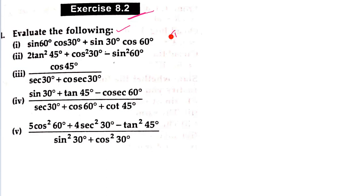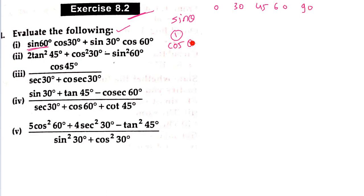Let's take the first example: sin60·cos30 + sin30·cos60. Let me give the table of values. For angles 0, 30, 45, 60, 90 degrees: sin 0 = 0, sin 30 = 1/2, sin 45 = 1/√2, sin 60 = √3/2, sin 90 = 1. And cos 0 = 1, cos 30 = √3/2, cos 45 = 1/√2, cos 60 = 1/2, cos 90 = 0. Note that sin and cos at 0 and 90 are exactly opposite, and 30 and 60 values are crossed.